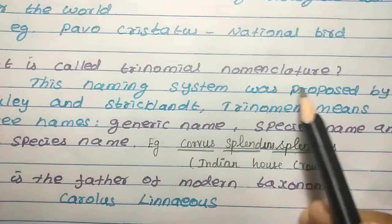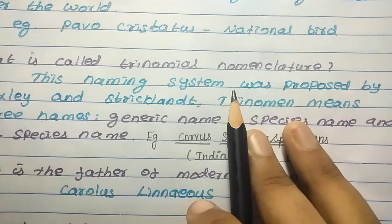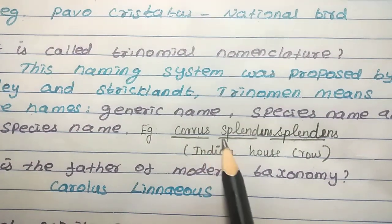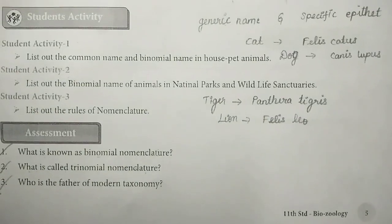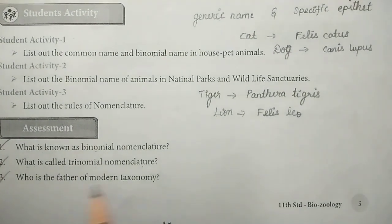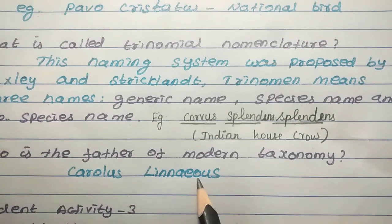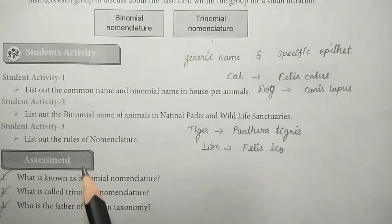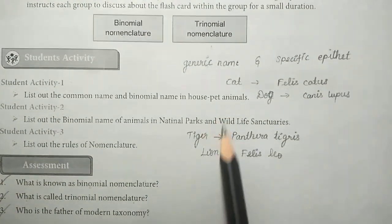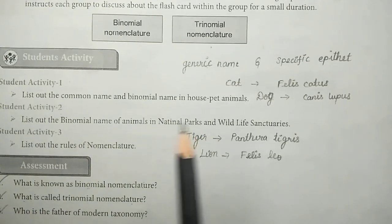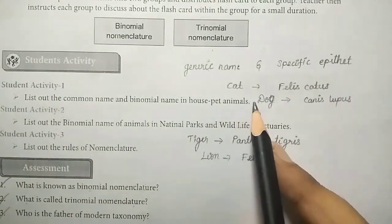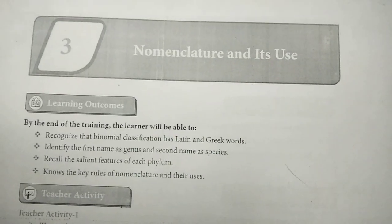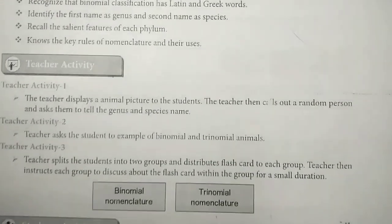We can see the rules for nomenclature: in printed form we write it in italics, in handwritten form we underline it. Next, who is the father of modern taxonomy? In this video we can see two lessons. Like and share it and subscribe. Thank you for watching.